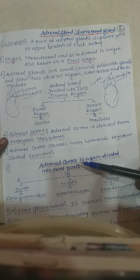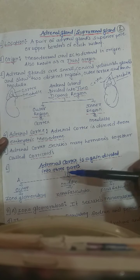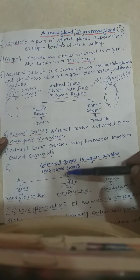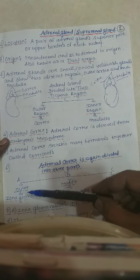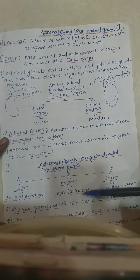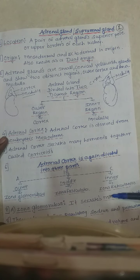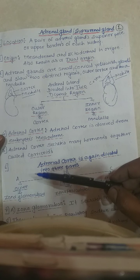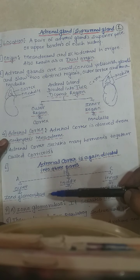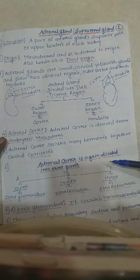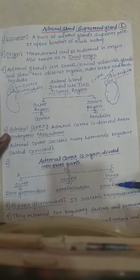The adrenal cortex is again divided into three parts. The outer is the zona glomerulosa, the middle is the zona fasciculata, and the inner is the zona reticularis.